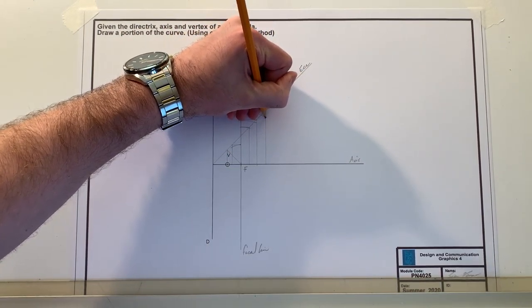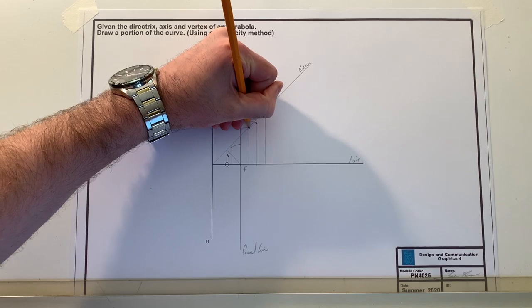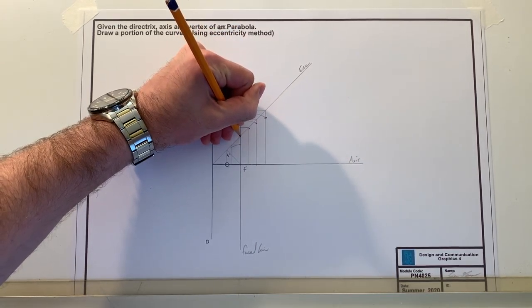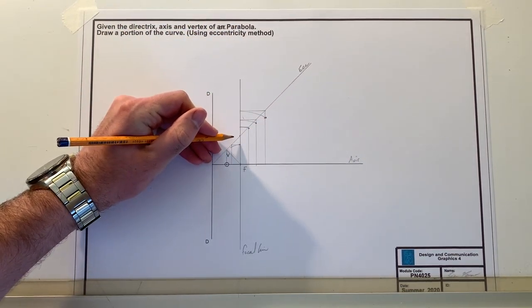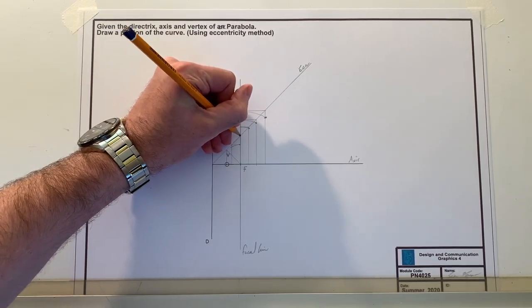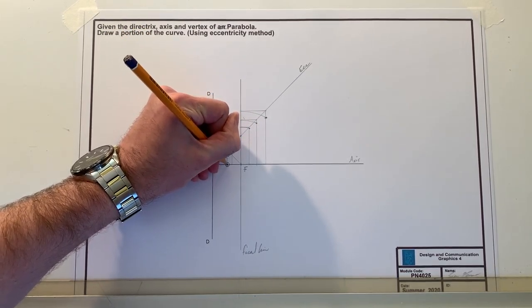So now we have a few different points in the curve. We'll highlight them points so you can see them nice and clearly there, there, there, there, and it's also going to hit here where the focal line hits the ECC eccentricity line here and back to the vertex.